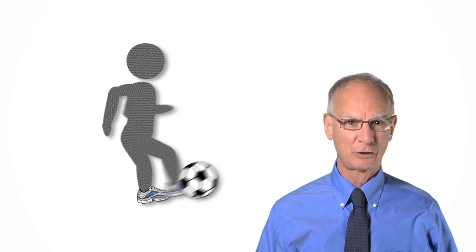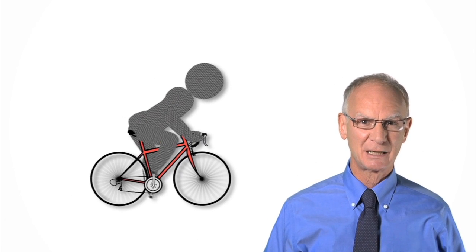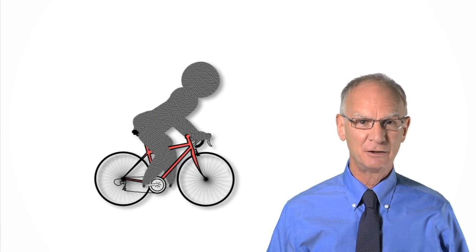We believe that certain types of physical activity that involve flexing the hip — things such as skiing, skating, jogging, soccer, even cycling — interact with the deformity, causing damage to the hip which leads to osteoarthritis.